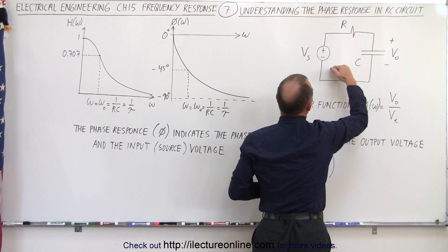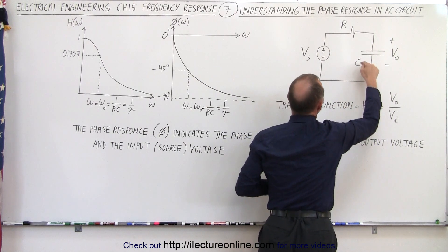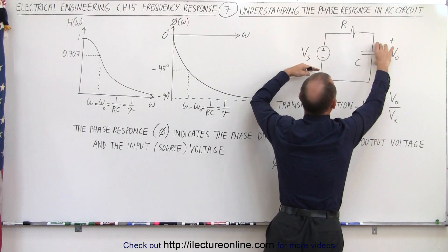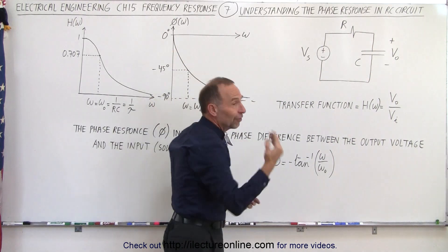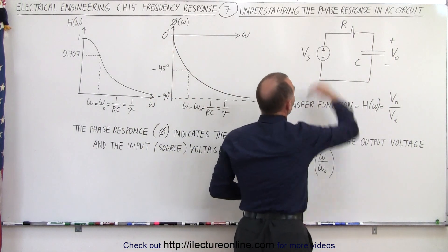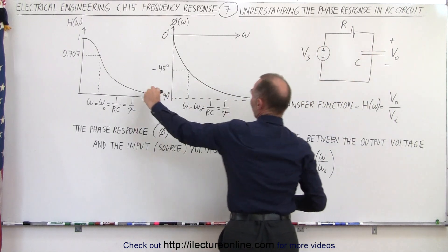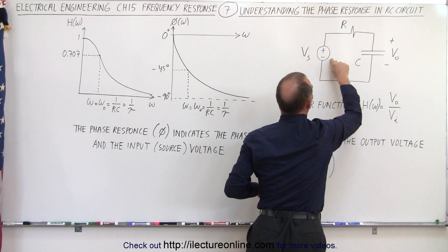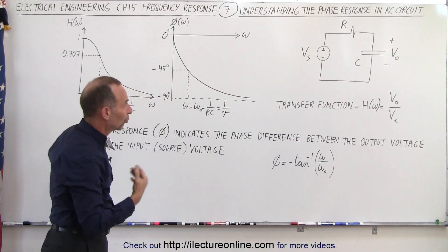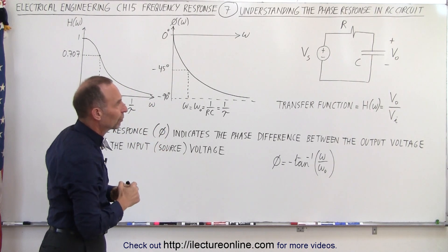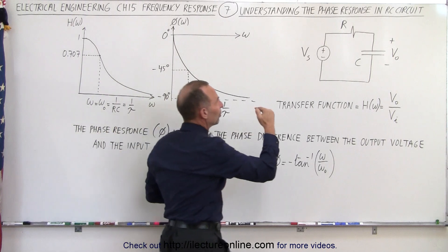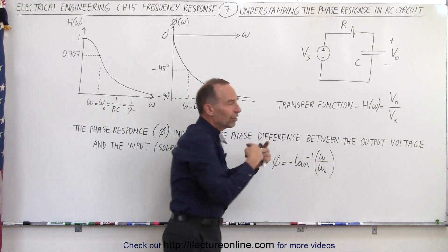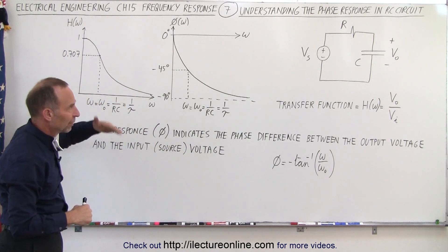Also, the capacitor voltage is not going to be able to keep up: the source goes up, the capacitor follows; the source goes down, the capacitor follows. The faster the source changes, the more difficult it is for the voltage across the capacitor to reach its maximum value, and the phase difference increases. When the frequency goes to infinity, it goes up so quickly that the capacitor cannot follow. The amplitude will go to zero, but the phase difference will go to 90 degrees. The phase across the capacitor follows the input source voltage and reaches 90 degrees as frequency approaches infinity.